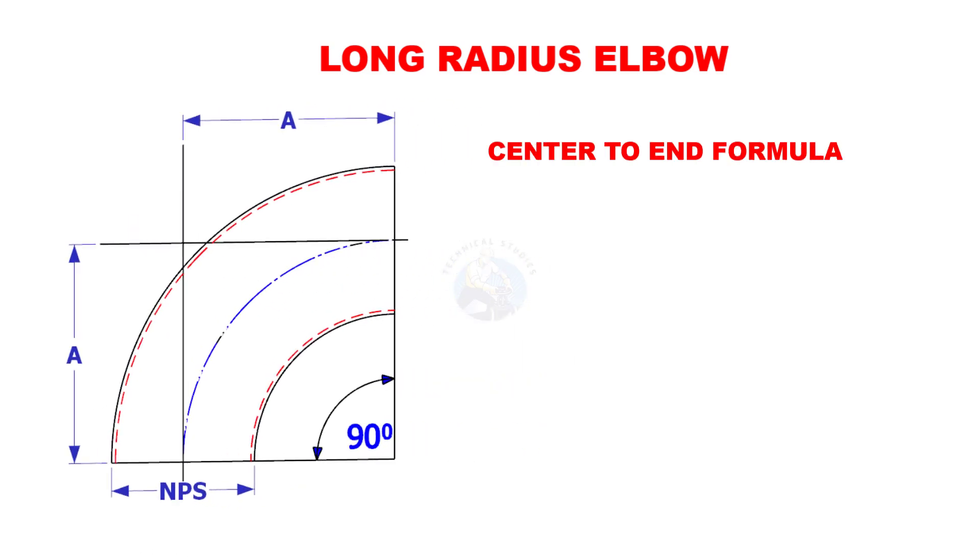Center to end formula. Assume that A is the center to end distance and NPS is the nominal pipe size.